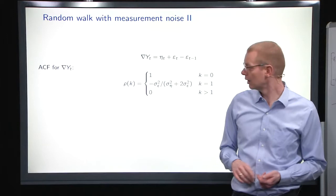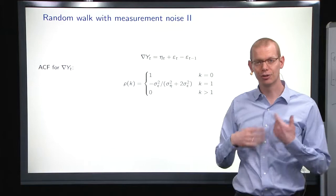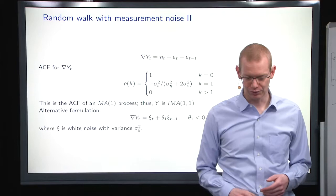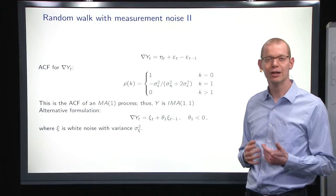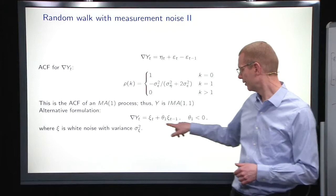So based on this, we should be able to identify which model structure it is. So we only have information at lag 1 in the ACF, so it's a moving average model of order one, but it's that for the difference Yt, so it becomes an ARIMA(1,1) or ARIMA(0,1,1) model for this.